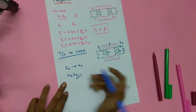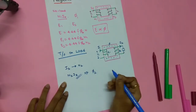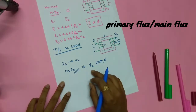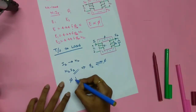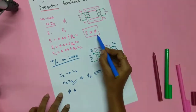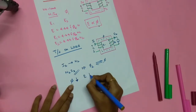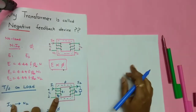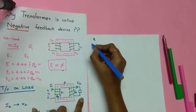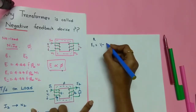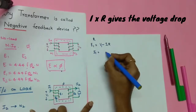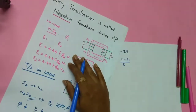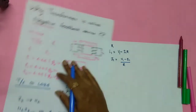Since i2 flows through N2 turns, a secondary MMF N2·i2 is produced, and due to this, a secondary flux φ2 is produced. This φ2 opposes the primary flux φ, trying to reduce it. As flux φ decreases, the EMF — which is directly proportional to flux — also starts decreasing. For a non-ideal transformer with primary winding resistance R, e1 = V1 − i1·R, and i1 = (V1 − e1) / R.